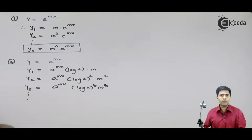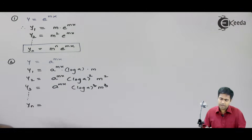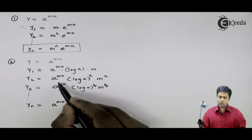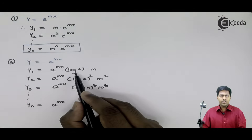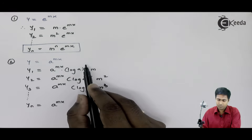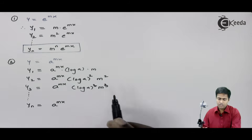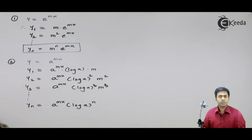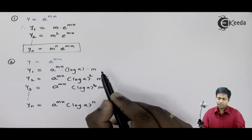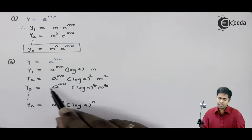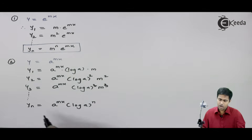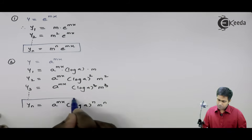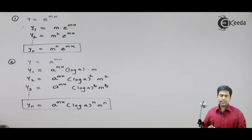So the formula is: a raise to mx, log a cubed, and m cubed. Let us predict the nth derivative. We get a raise to mx as it is — because in all three derivatives we were getting the a raise to mx term. Next, log a: in the first derivative, log a had power 1; in the second derivative, 2; in the third, 3. So in the nth derivative, the power will be n — giving log a raise to n. Similarly for m: y1 gives m raise to 1, y2 gives m raise to 2, y3 gives m raise to 3 — so y_n gives m raise to n. This becomes the formula for the nth derivative of a raise to mx.